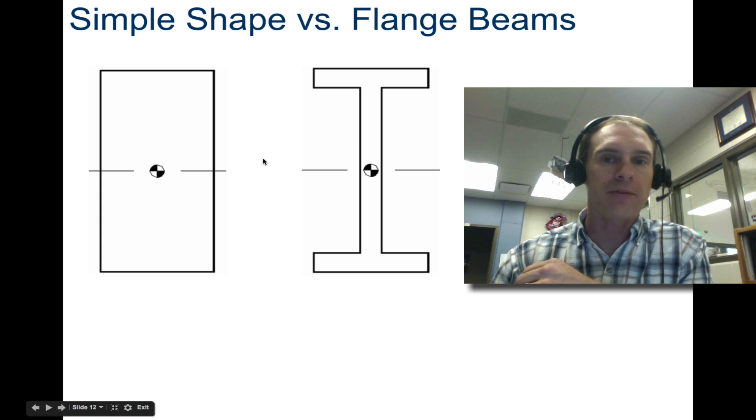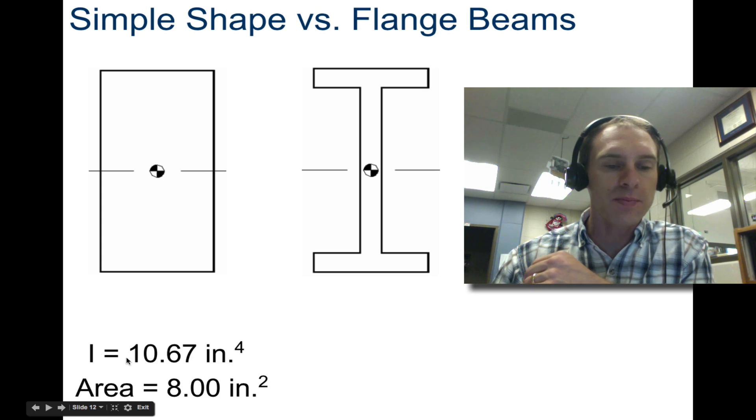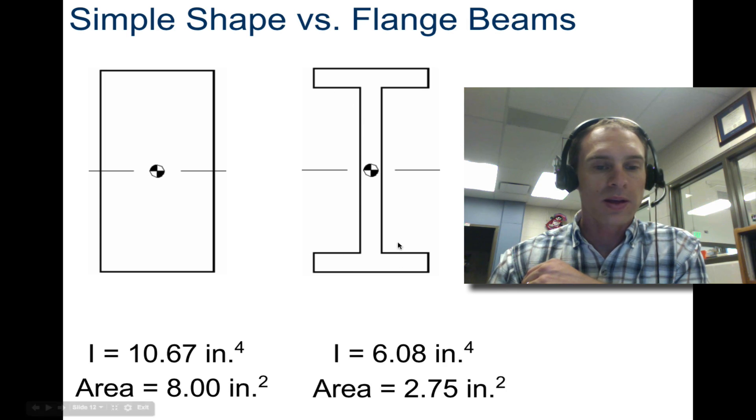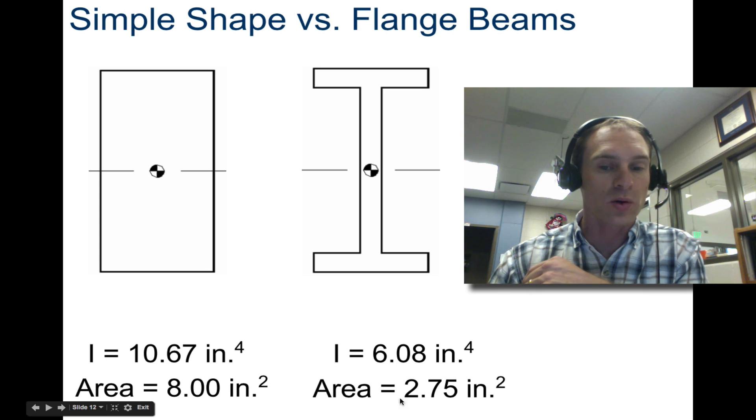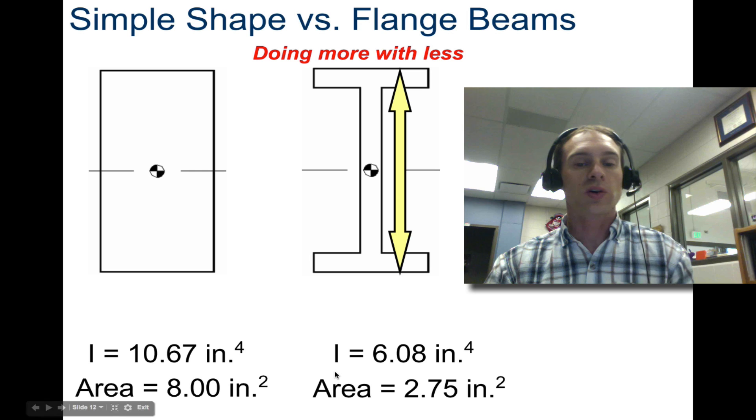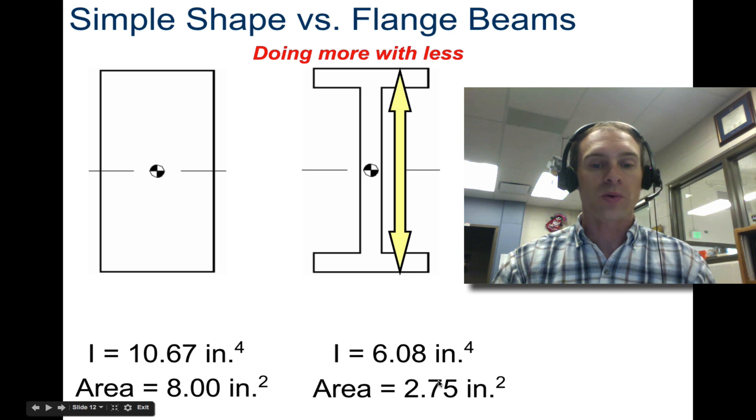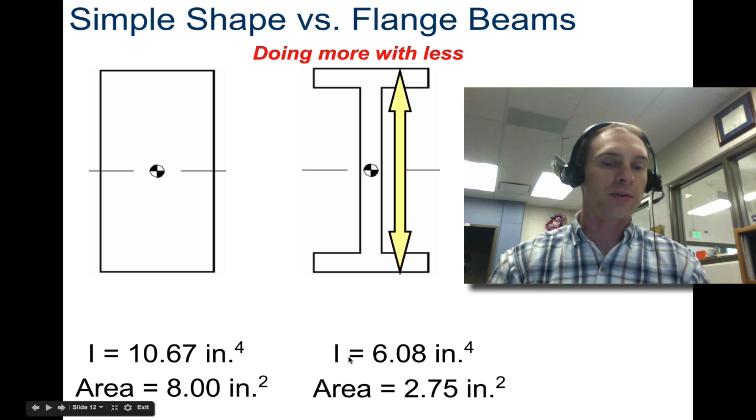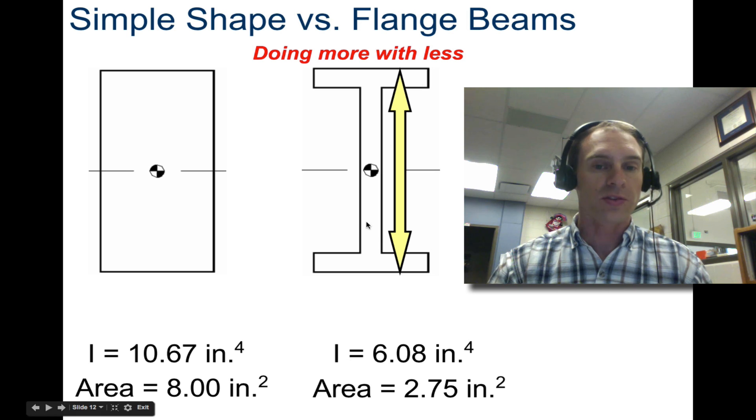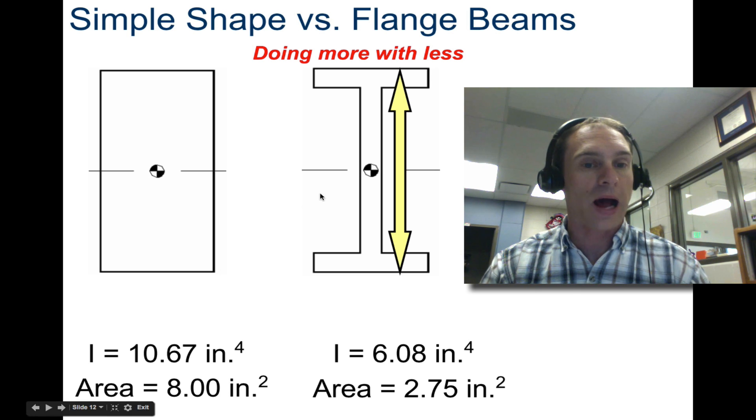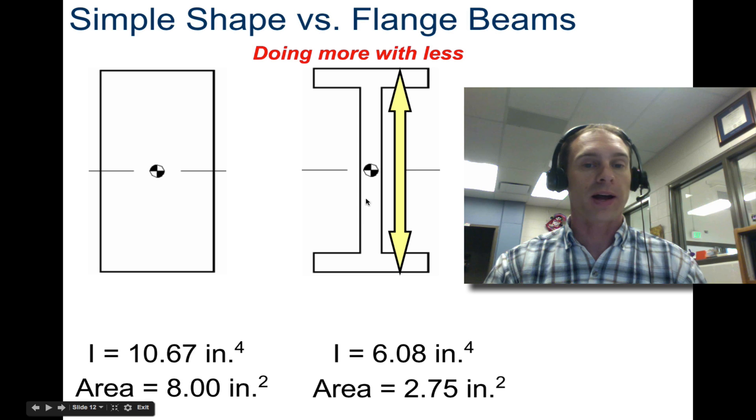We can look at a simple shape versus flange beams. We have the second moment of inertia here is 10.67 inches to the fourth. Total area is 8 inches squared. But now let's take a look at what happens if we remove a lot of this material. The second moment of inertia is 6. Total area is significantly less. You're doing a lot more with less. You have a very close to the same second moment of inertia, but your area is almost 4 times as small. Second moment of inertia is not even twice as small. That's why I-beams are really useful. You can do more with less. Now obviously this has a greater second moment of inertia. It's thicker. So that might be preferred, but it's going to be significantly heavier if this is a beam going straight out. You can do more with less by making it as an I-beam shape.